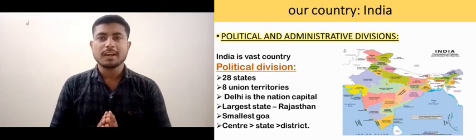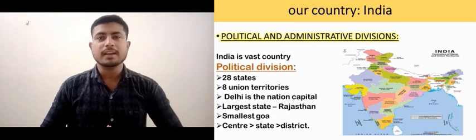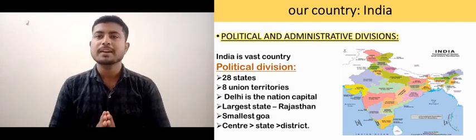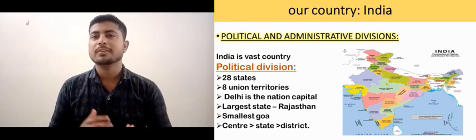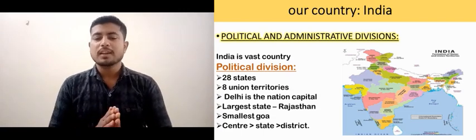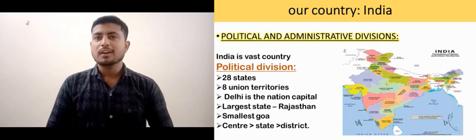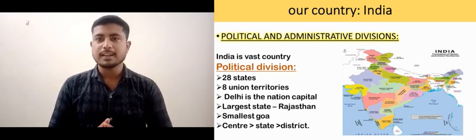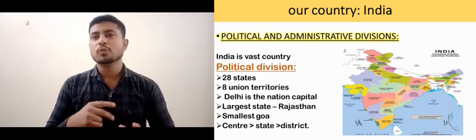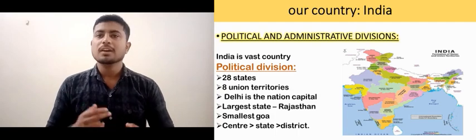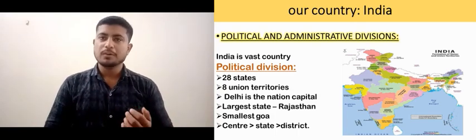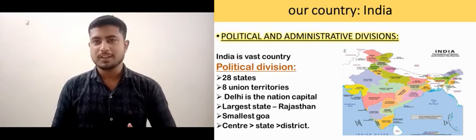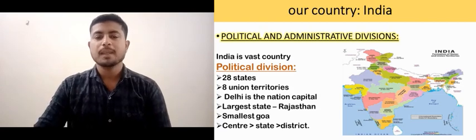You may have the question why 28 states and not 29 — Telangana was introduced earlier, but recently Jammu and Kashmir has been divided into two union territories, which is why we have 28 states. And regarding union territories: Daman and Diu have been merged, and Dadra and Nagar Haveli have been merged, so finally we have 8 union territories.